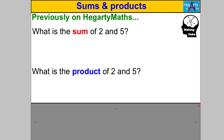Here's two questions for you. What's the sum of two and five? What's the product of two and five? Well, sum means to add the numbers — the sum of two and five is going to be seven. And the product of two and five is two multiplied by five, which is ten. Very easy.